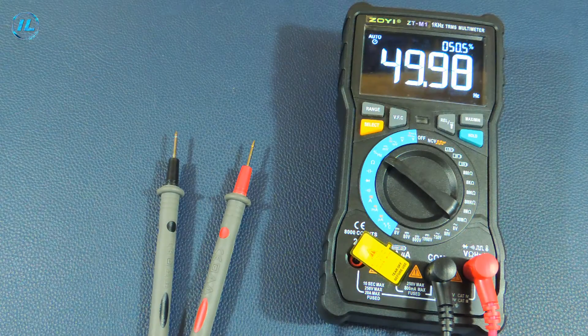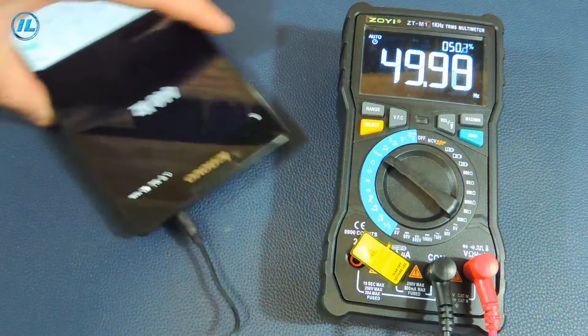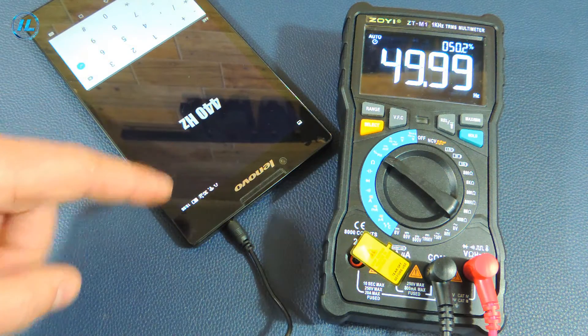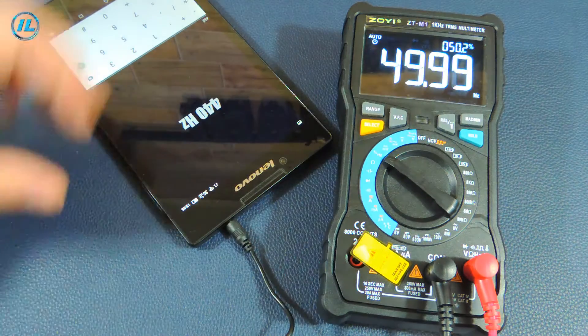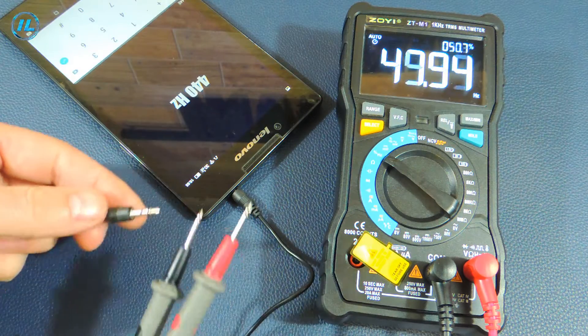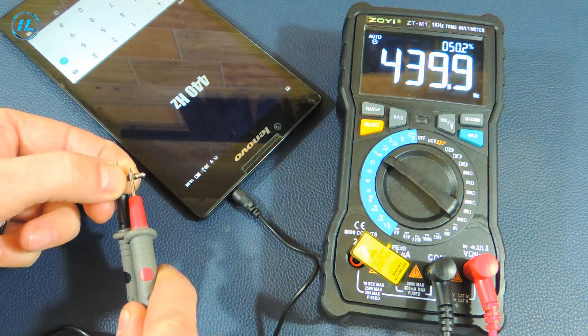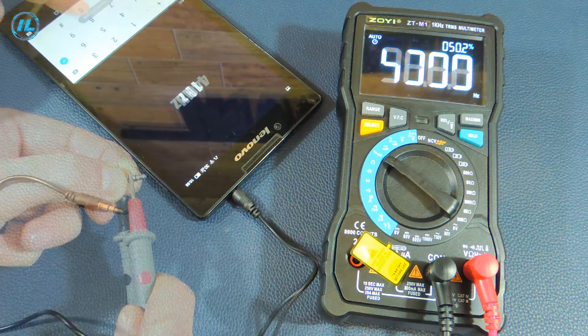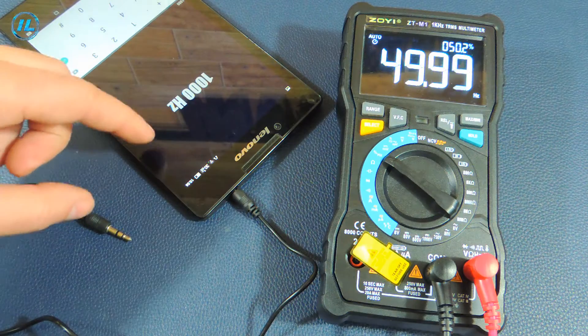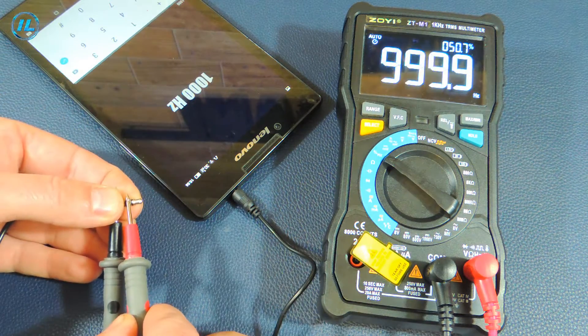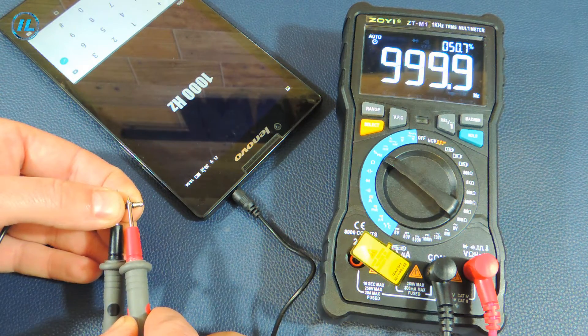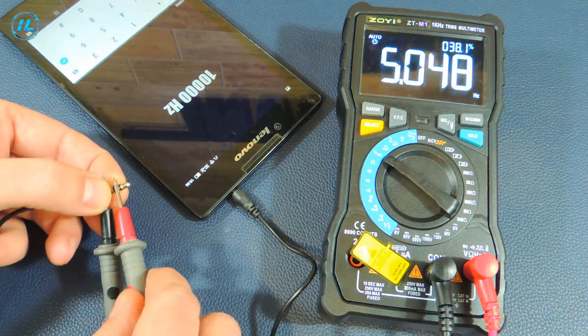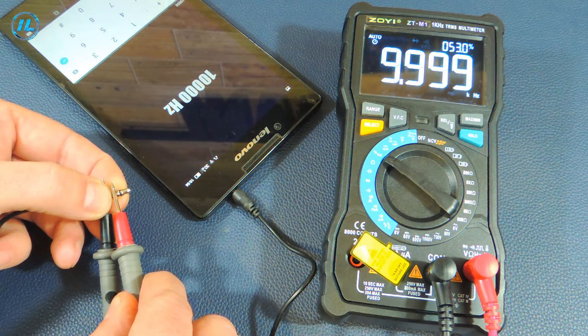This is followed by a frequency measurement. To test this measurement mode, I connected a tone generator. And now let's see how the readings will match. 440 hertz. The multimeter shows almost 440 hertz. 1 kilohertz. The same result as shown on the multimeter. 10 kilohertz. 9999 hertz.